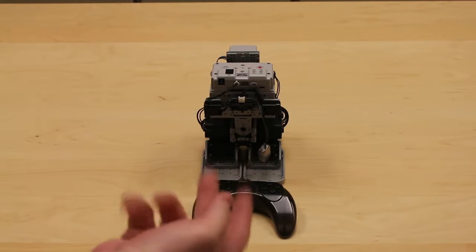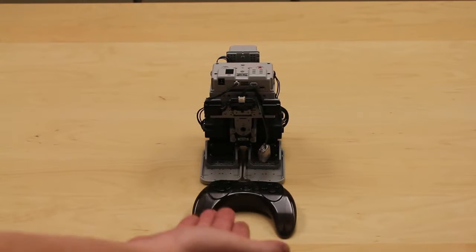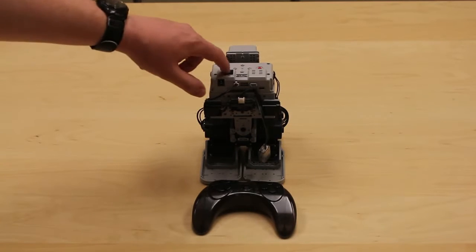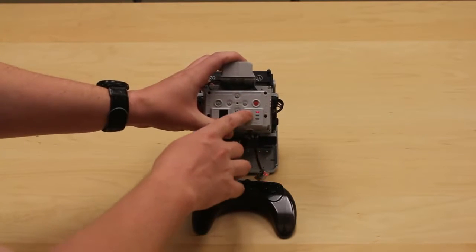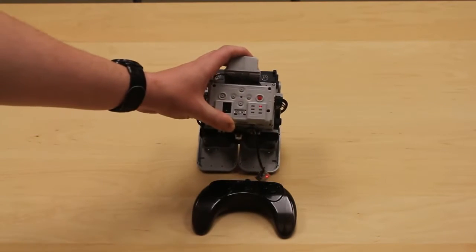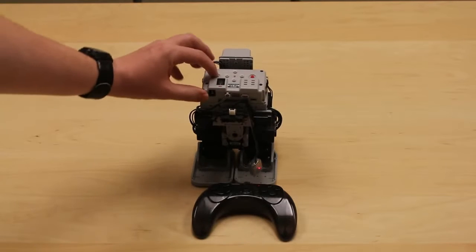So now that we have downloaded both the task and motion file for this new modified GerWalk, let's test him out. Let's turn on the controller. Make sure that it's on play mode, which is the red LED.